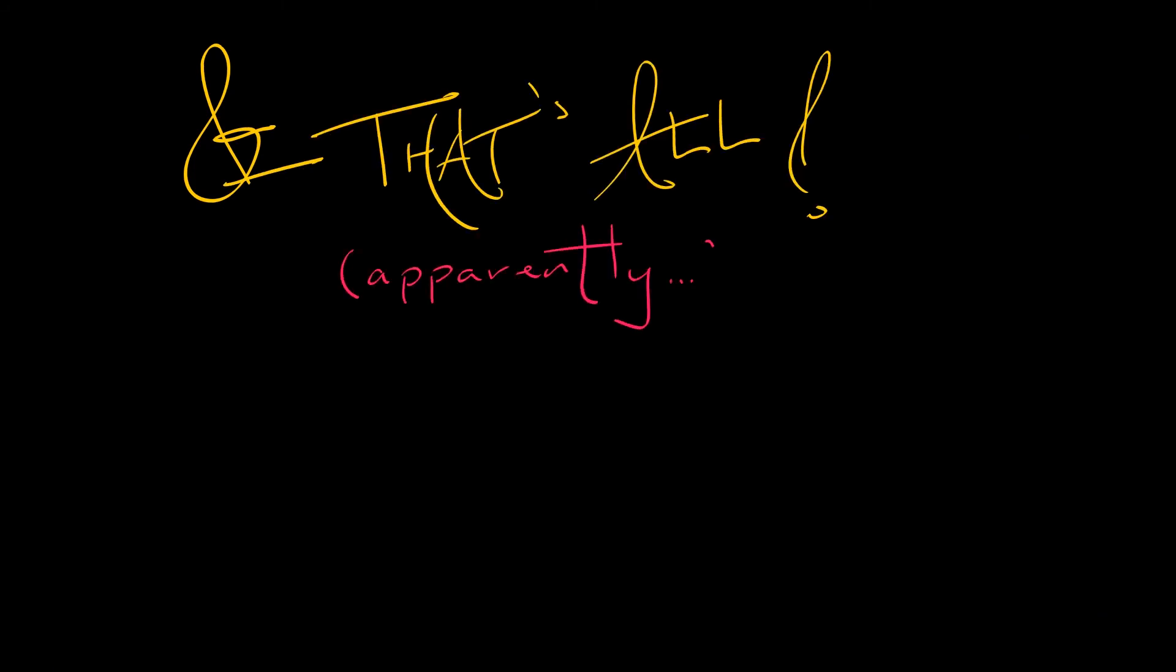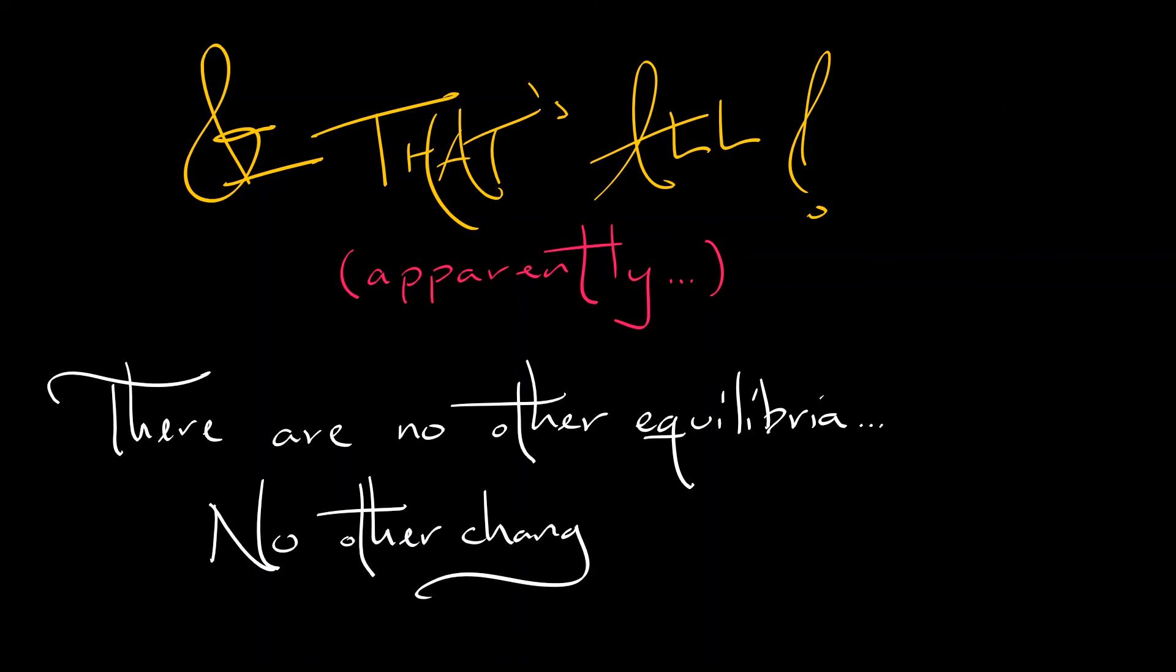Apparently. There are no other equilibria in this system. There are no other changes to this equilibrium. Only at mu equals zero, you go from a spiral source to a spiral sink, or vice versa. That's it. We've got it all figured out.